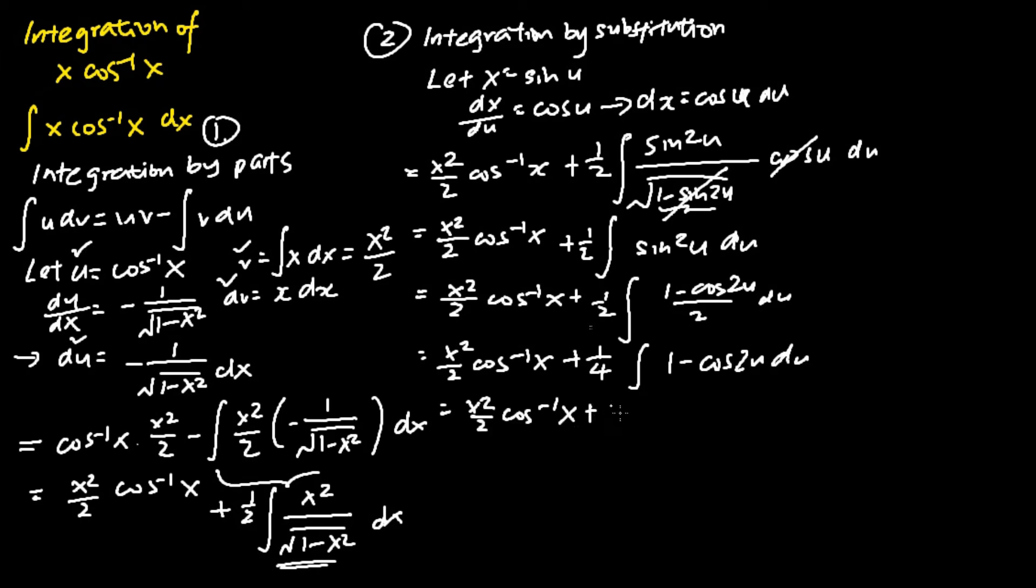And we can now evaluate the integral. Basically, the whole integral solution is just u subtracting away sine 2u over 2 plus c. Next,